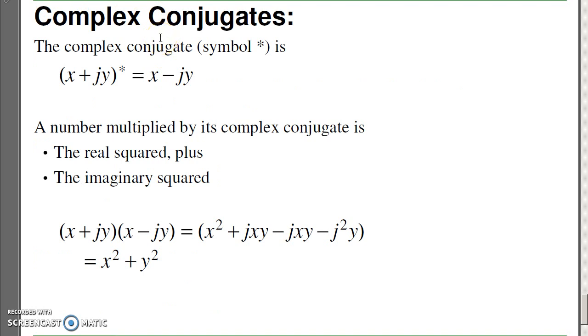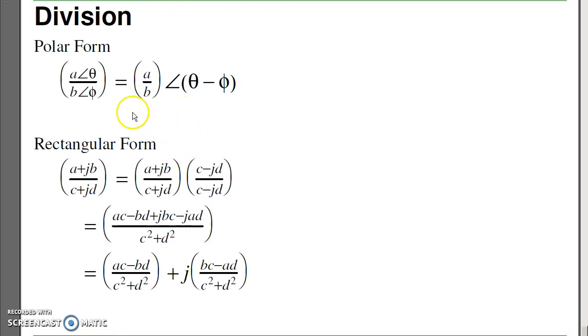To divide complex numbers, you need a thing called the complex conjugate. The complex conjugate is the complex number where you keep the real part unchanged. You change the sign of the complex part. A property of complex conjugates is the number times its complex conjugate is the real part squared plus complex part squared. The middle terms cancel. With a complex conjugate, I can now divide complex numbers. In polar form, it's fairly easy. It's just the a over b for the amplitude and the angle subtract. In rectangular form, you can also do it. Take the numerator denominator, multiply by the complex conjugate of the denominator, do some algebra, and you wind up with a complex number.